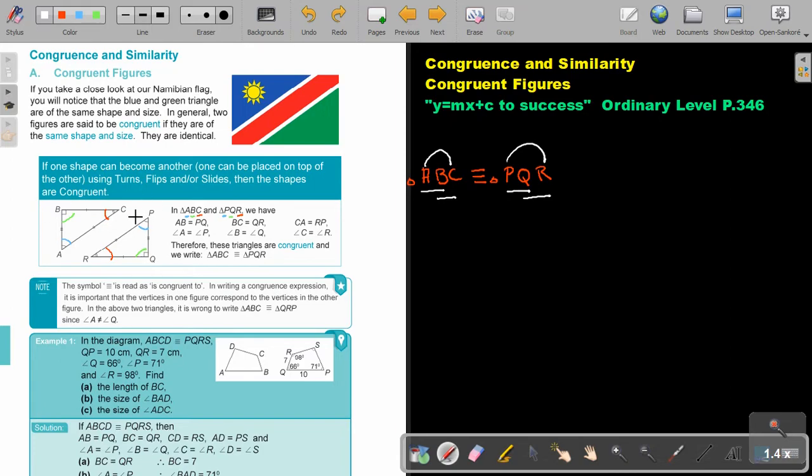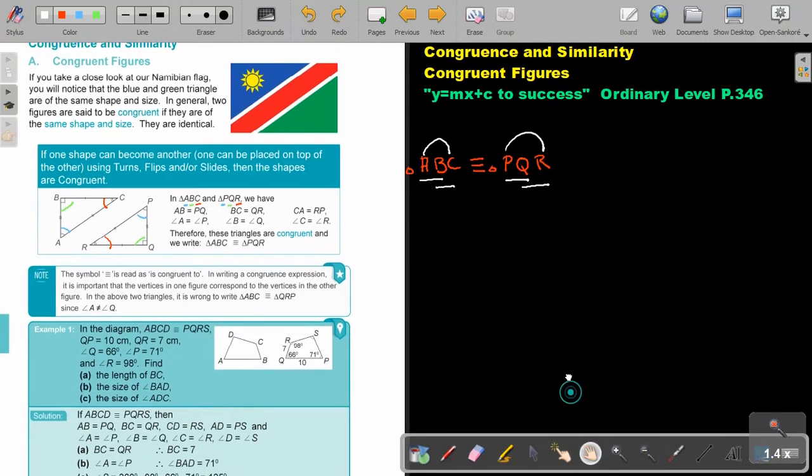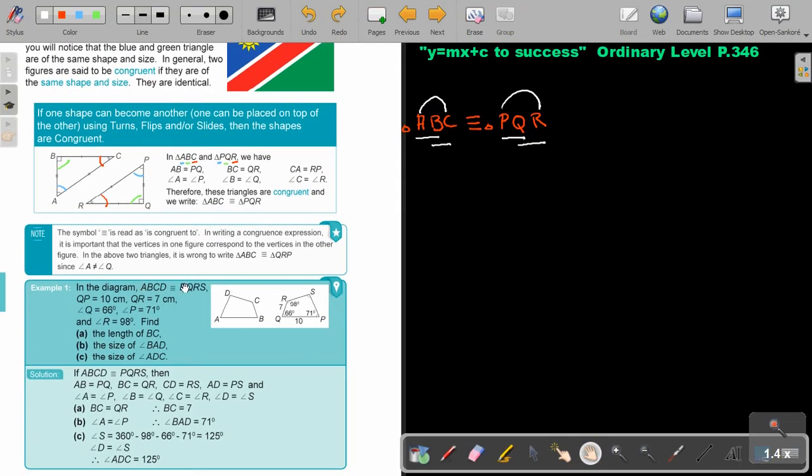But let's look at an example. In this quadrilateral, this will be congruent to this. And then they give you the dimensions. And then they ask you to find the length. Now, it's very important. First, write it. They will give it to you in the correct order.